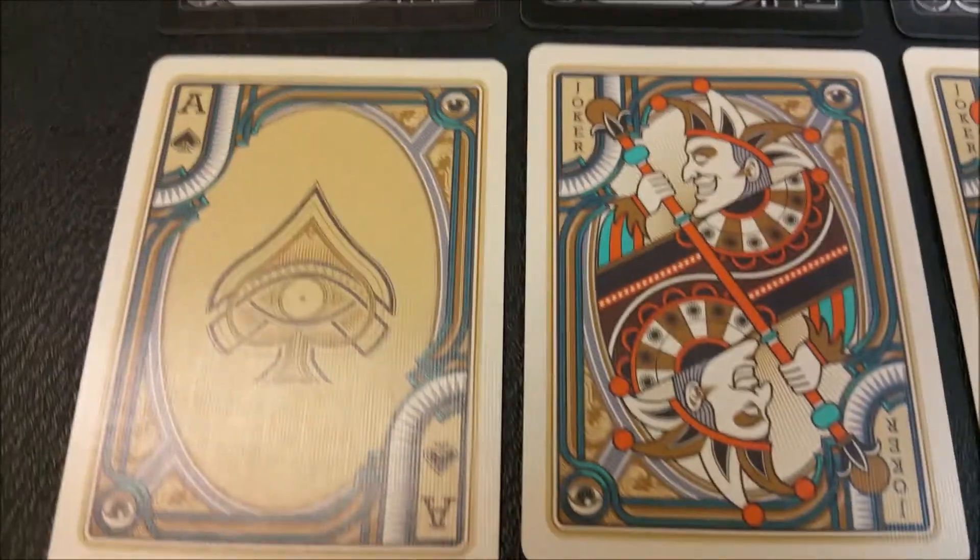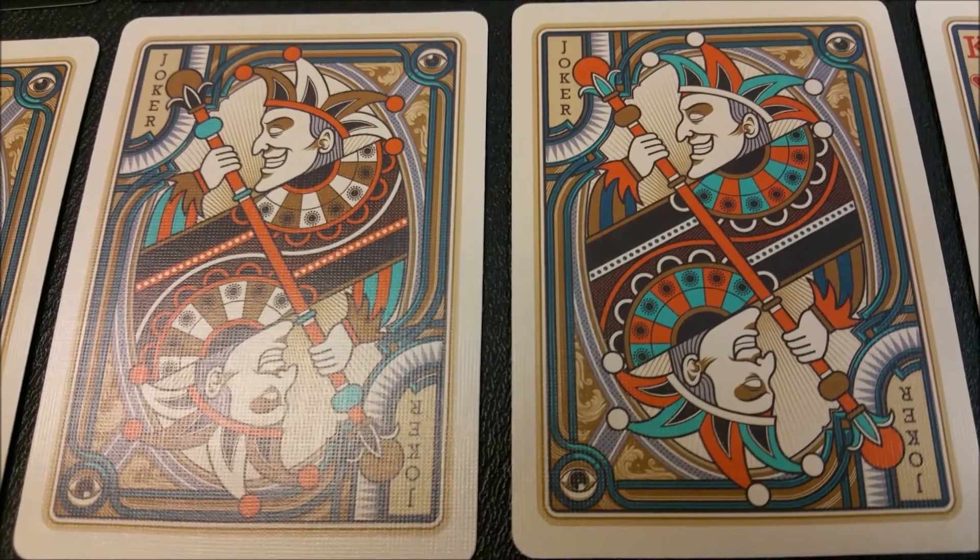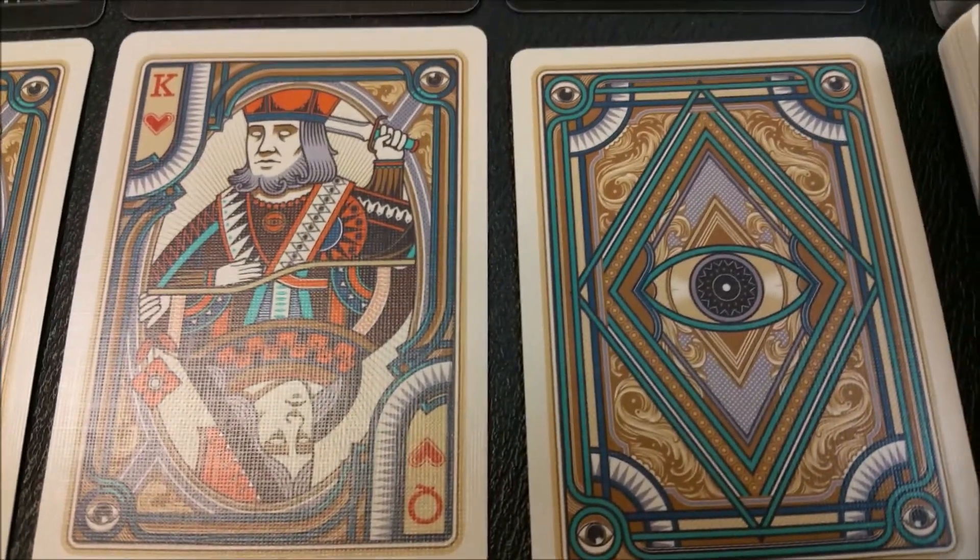For the light shade edition, here is your Ace of Spades, and your two jokers. Look how beautifully colored they are. And here are your two gaff cards, your double backer, and your double ender.